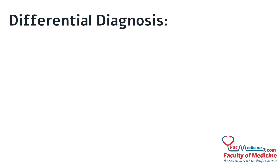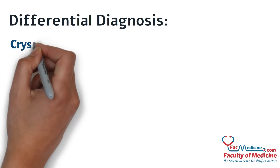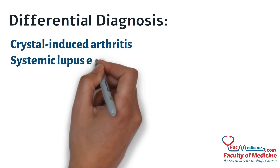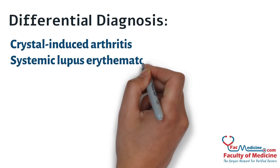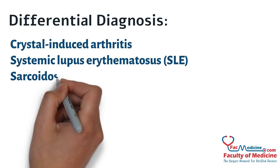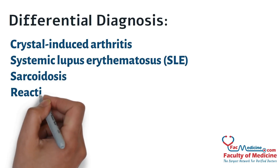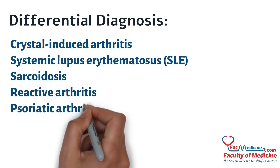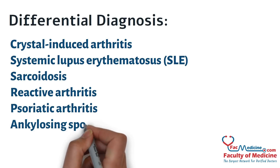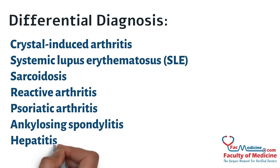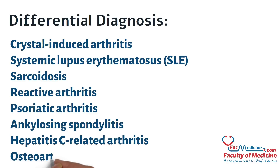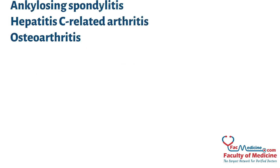Differential diagnosis: Many disorders can simulate rheumatoid arthritis, including crystal-induced arthritis, systemic lupus erythematosus (SLE), sarcoidosis, reactive arthritis, psoriatic arthritis, ankylosing spondylitis, hepatitis C related arthritis, and osteoarthritis.